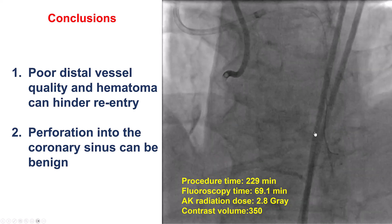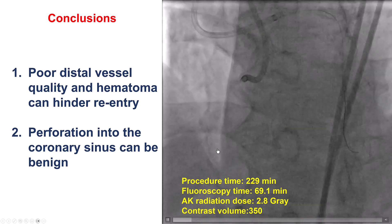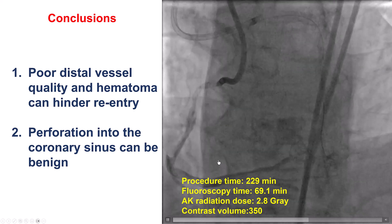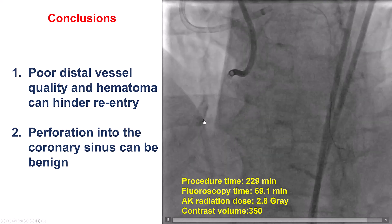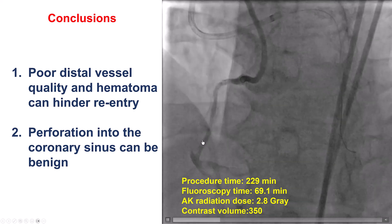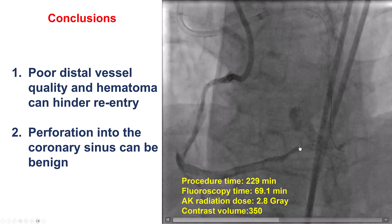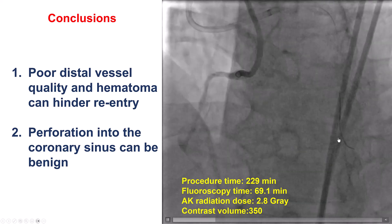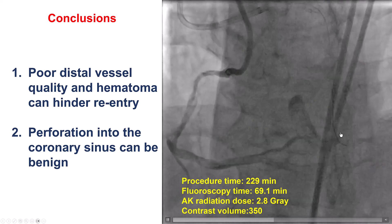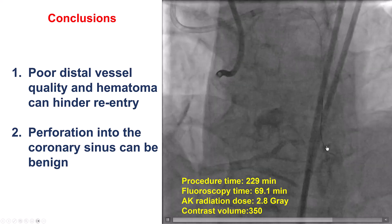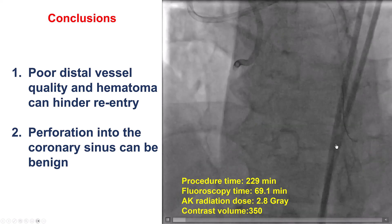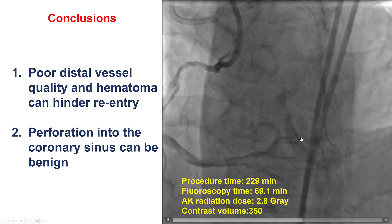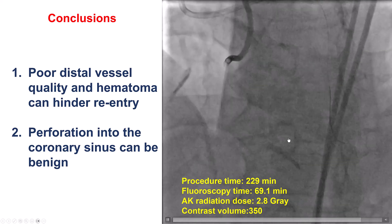The lessons from this case are: number one, when you have a hematoma forming distally and a diffusely diseased distal vessel, re-entry can be challenging. In cases like this, an investment procedure — and STAR specifically — can be useful. However, one should be careful with advancement of the wire, because if the wire goes too distal, distal vessel perforation can happen. In this particular case, there was a connection between the distal posterolateral and the coronary sinus, but there was no effusion. The patient was stable, and this was managed conservatively.